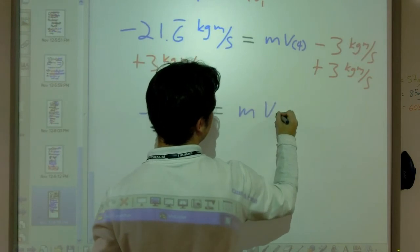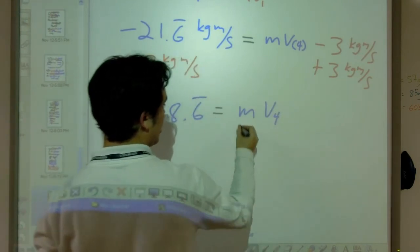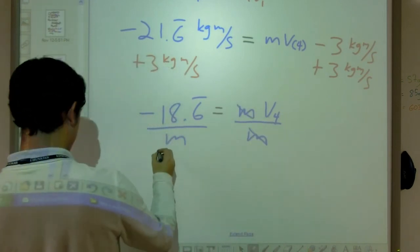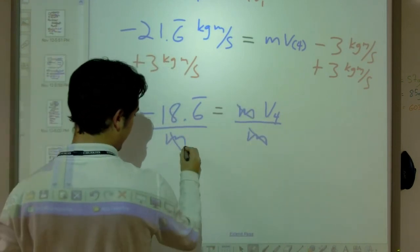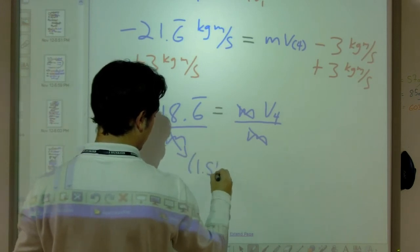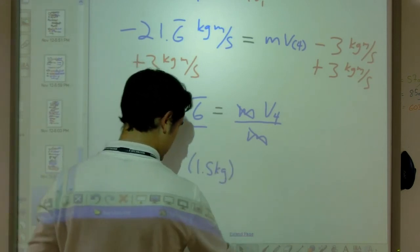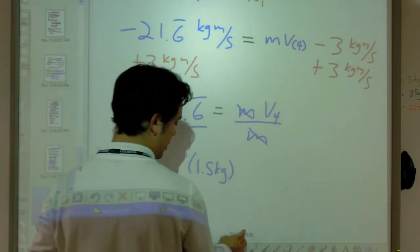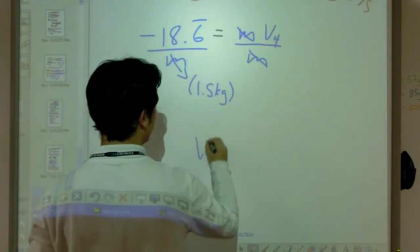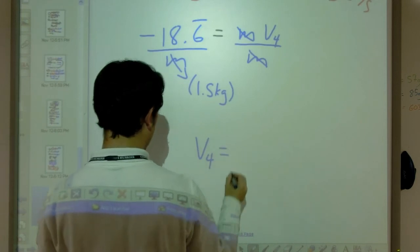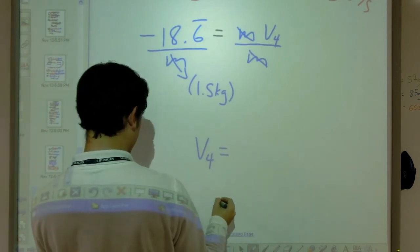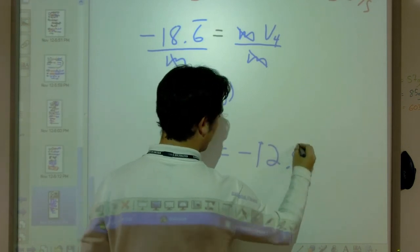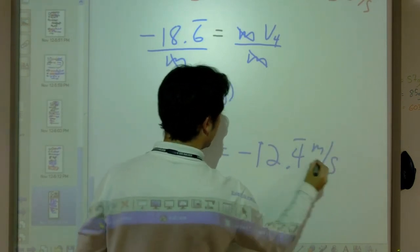Mass times velocity at time four, I'm going to divide by the mass to get my final velocity, which is what I want. This is 1.5 kilograms, so I divide this by 1.5, and I end up with my final velocity. My velocity at time equals four, also known as my final velocity, equals negative 12.4 meters per second.